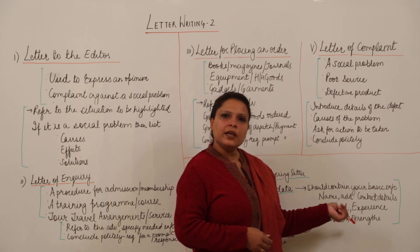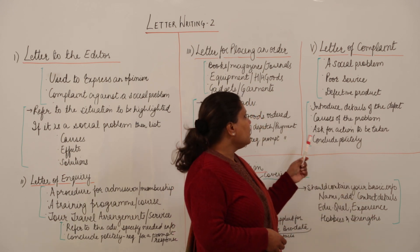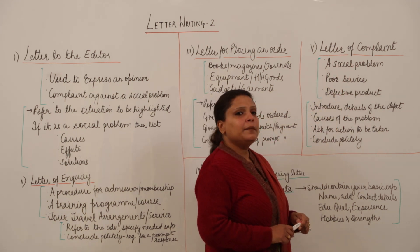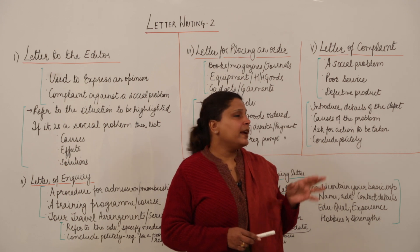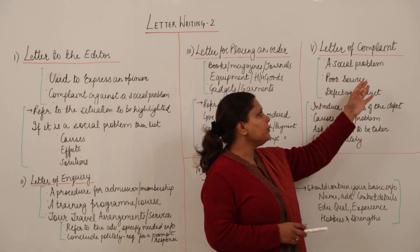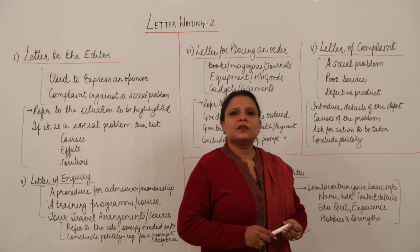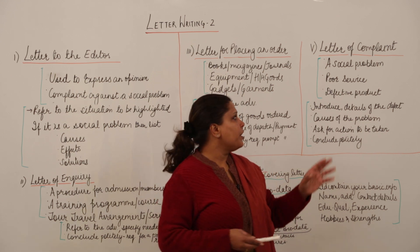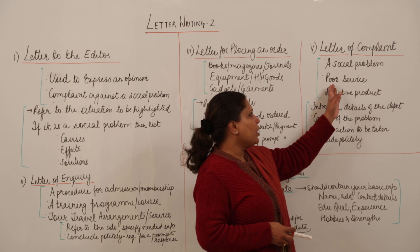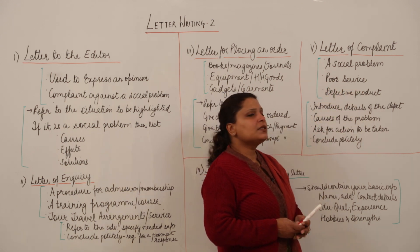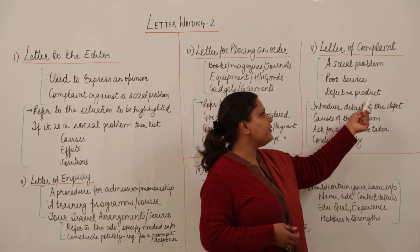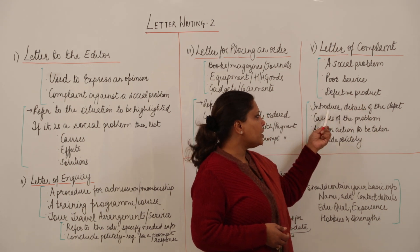Then the fifth type of letter is a letter of complaint. You might be wanting to complain against a social problem to a specific person or an administrative head or a judicial authority. You might be wanting to complain against poor service by someone privately or publicly or against a defective product. Introduce yourself,